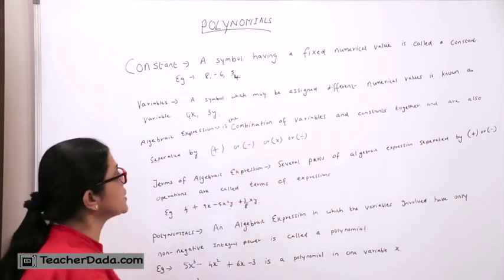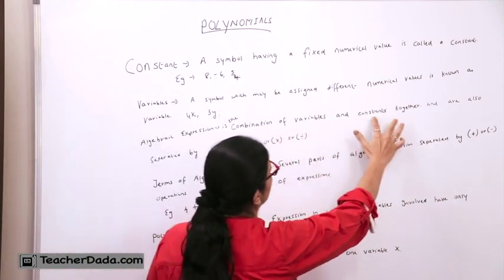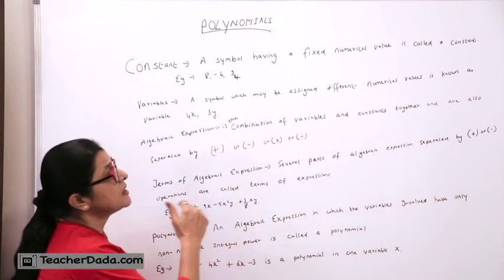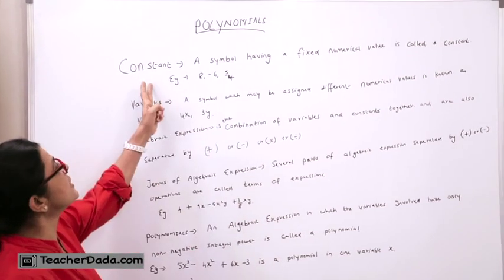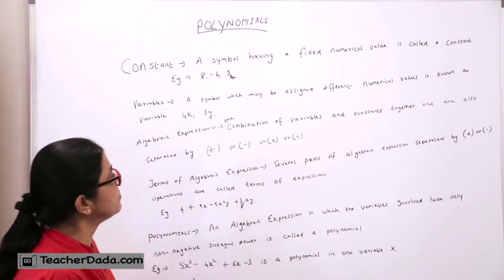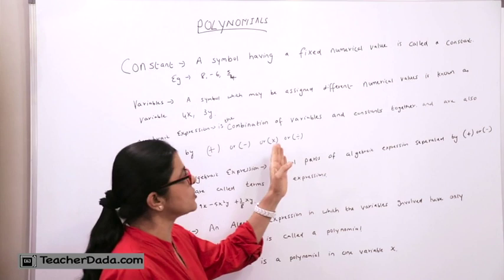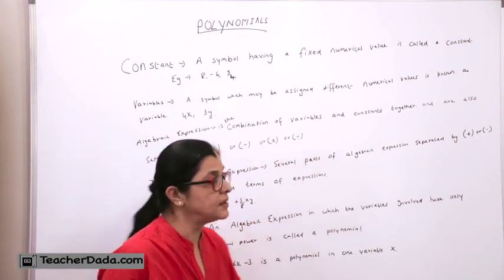Now what is algebraic expression? Algebraic expression is a combination of variables and constant together. The constant term and variable together is termed as algebraic expression, but these algebraic expressions are separated by plus or minus or multiplication or division sign.